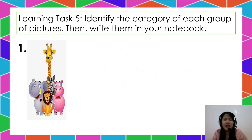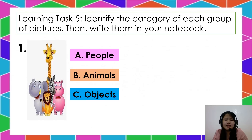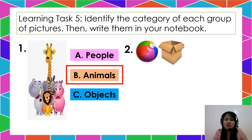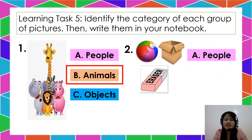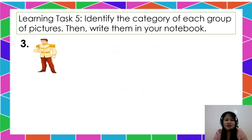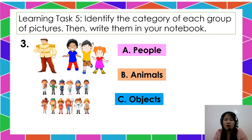For our learning task 5, identify the category of each group of pictures, then write them in your notebook. Number 1: Is it A, people; B, animals; or C, objects? The correct answer is letter B, animals. Number 2: Is it A, people; B, animals; or C, objects? The correct answer is letter C, objects. Number 3: Is it A, people; B, animals; or C, objects? The correct answer is letter A, people.